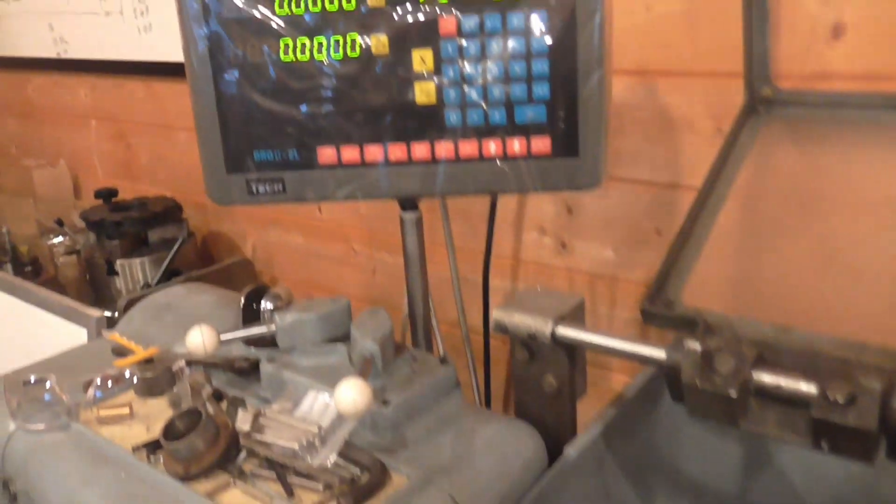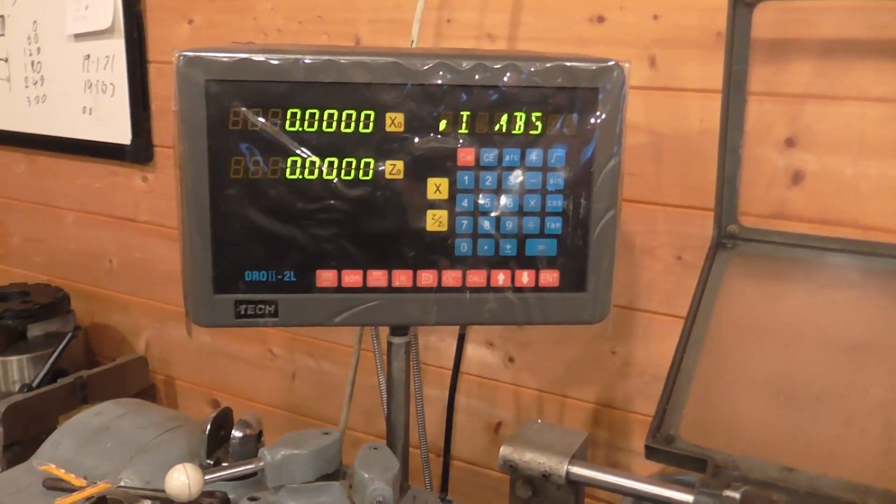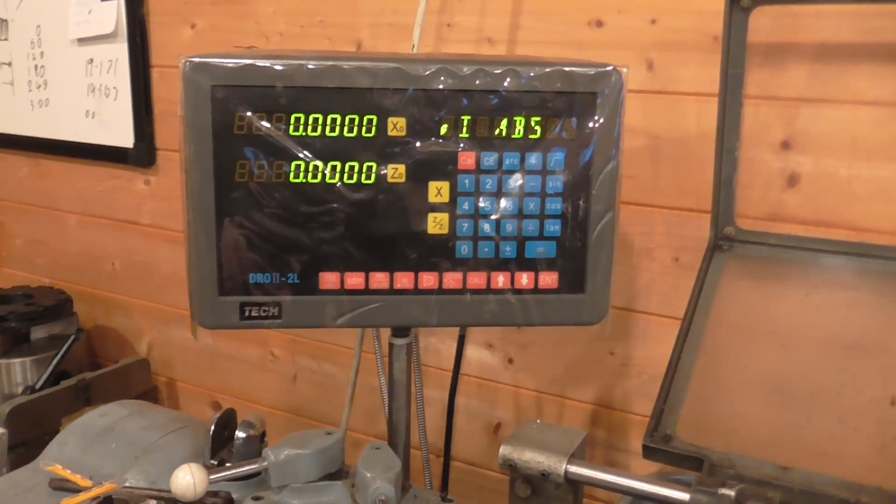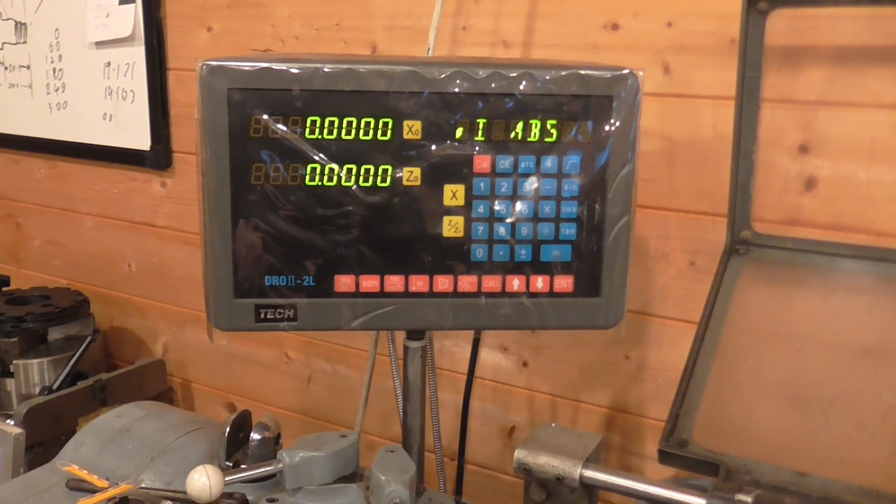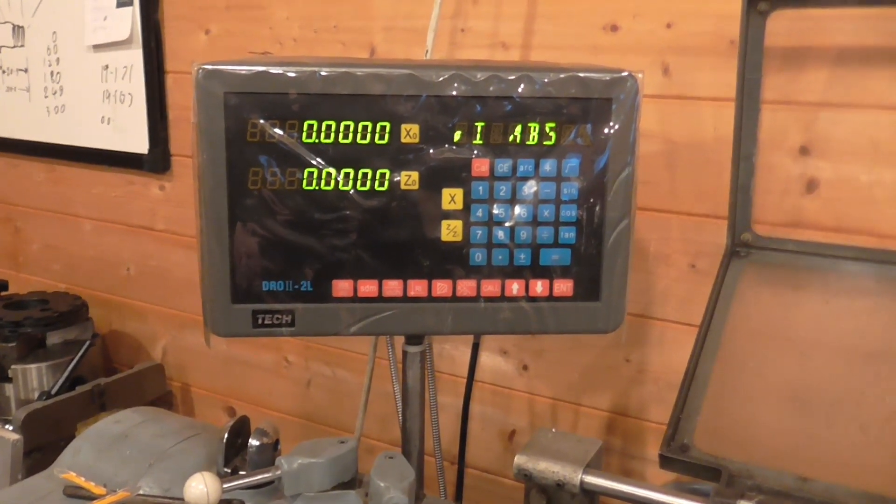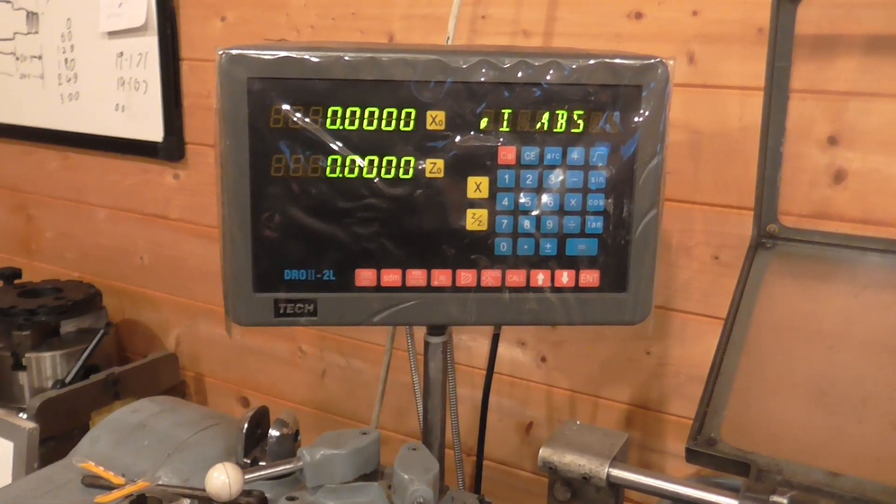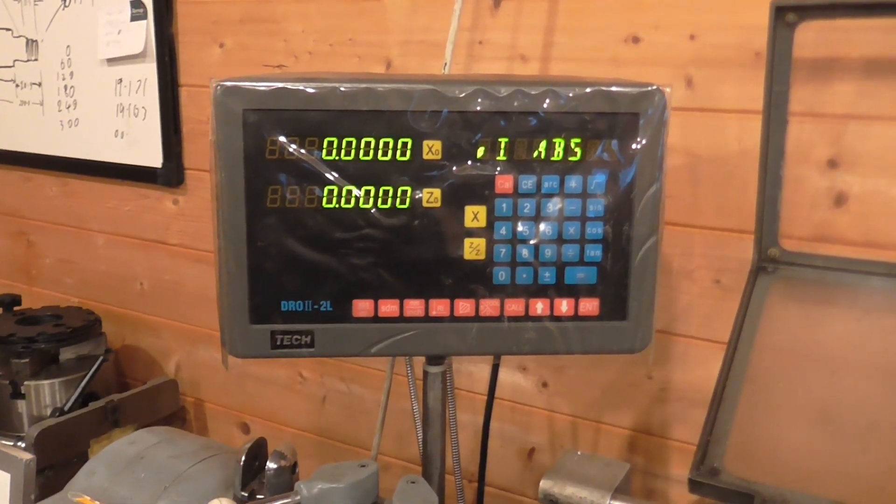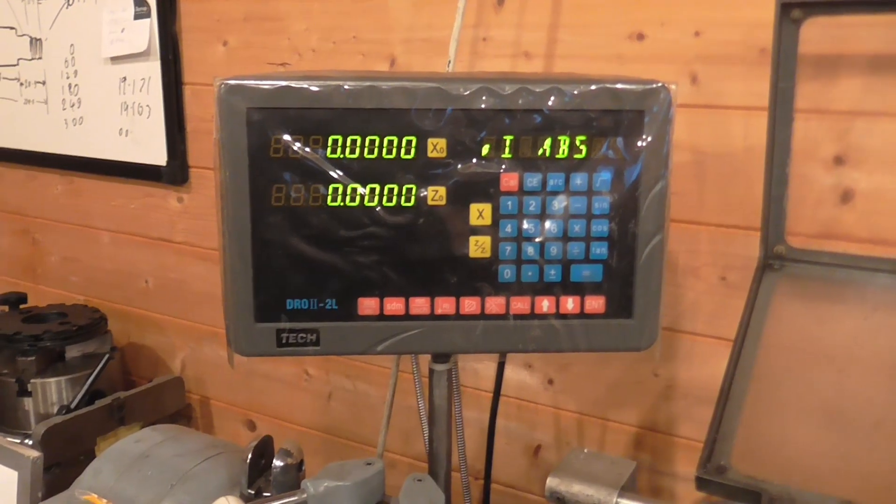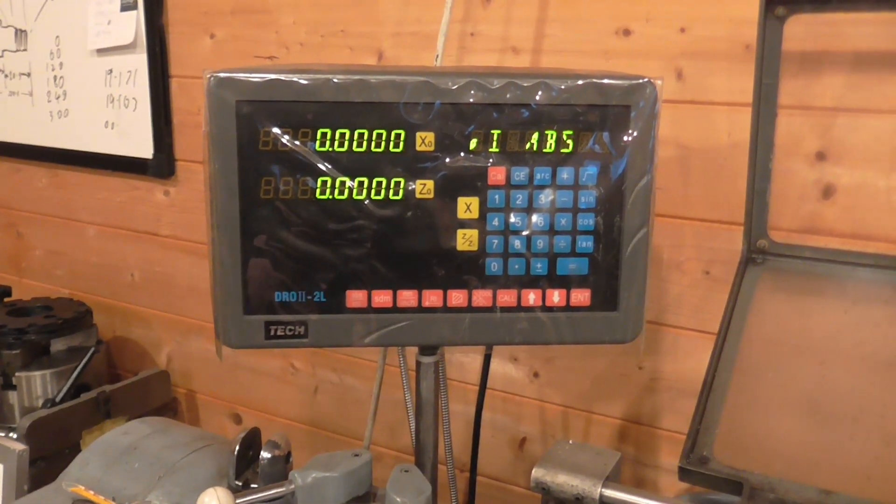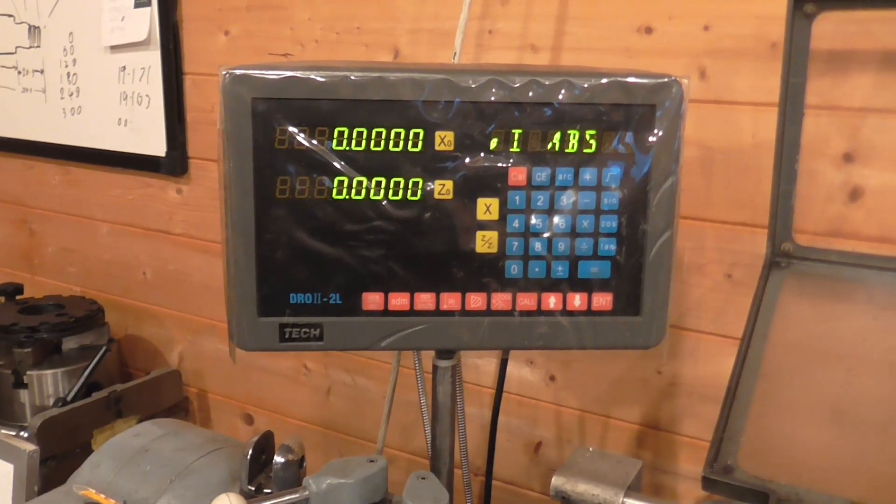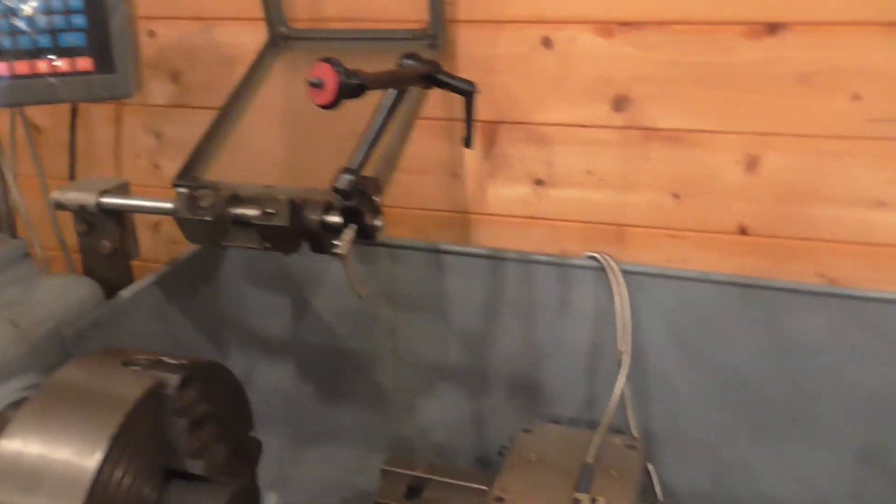But now I can actually use the DRO. The taper is three-quarters of an inch on diameter per foot. The display reads out in diameter on the x-axis. I've got a usable four plus inches of travel on the taper turning attachment. And four being one-third of a foot, I can look for a change in diameter of one-quarter of an inch. Nice round numbers.